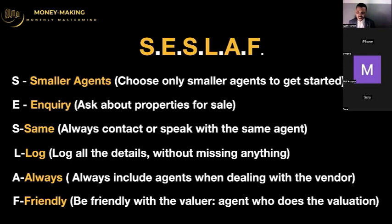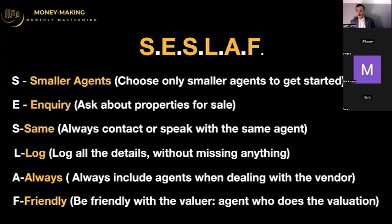The second S stands for Same — every time you contact estate agents, you need to deal with the same person and the same agents. We want to build a relationship, so you need to find out their interests and passions. The more you find out about them, the easier the relationship becomes. You can take them to lunch, give them gifts, ask about family birthdays. Property is a people's business — it's about people.